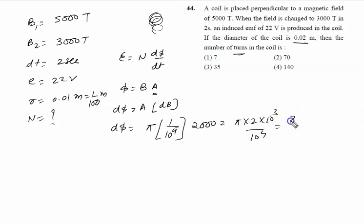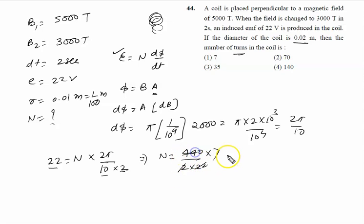Ultimately it is 2π/10. Now use this formula: E is given to us as 22 volts, and we have to calculate N. dΦ is 2π/10, dt is 2. Further we solve: N = 22 × 2 × 10 / 2π. That is 440 / 2π. π itself is 22/7, so 44 cancels with 44, leaving 70. So the right answer to this problem is option 2, that is 70.